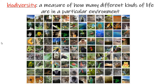Finally, we're going to look at the biodiversity of these different biomes. Biodiversity, b-i-o-d-i-v-e-r-s-i-t-y, is a measure of how many different kinds of life are in a particular environment. For example, in a rainforest there are lots and lots of different kinds of creatures. It's not how many animals you have, but how many different kinds that defines biodiversity.